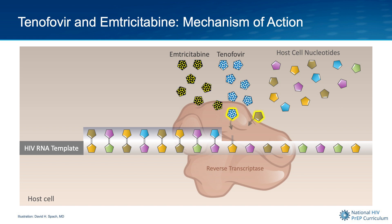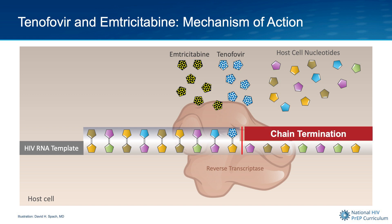When these medications reach a high enough concentration inside the cell, they compete with the host cell nucleotides for substrate binding by the HIV reverse transcriptase enzyme. So if tenofovir or emtricitabine is incorporated into the elongating chain, no further nucleotides can be added. This is referred to as chain termination, and the process of converting HIV RNA into HIV DNA is halted.